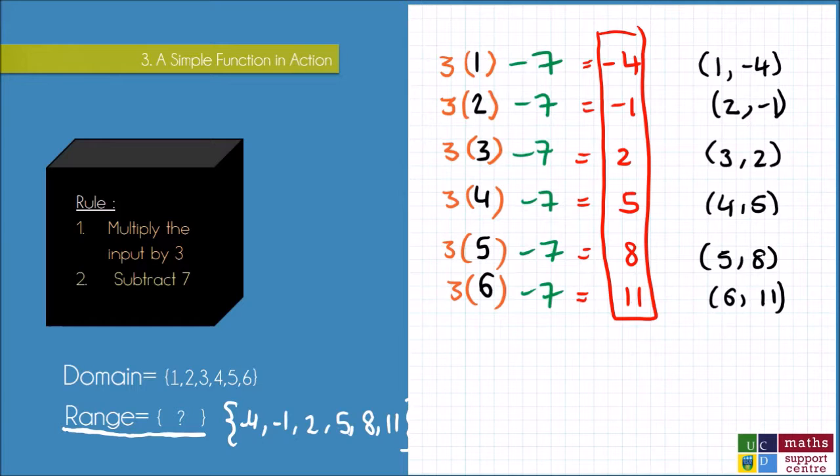So what was I doing to all of my inputs? Well, I was multiplying the input by 3, and then I was subtracting 7, and that gave me my output.